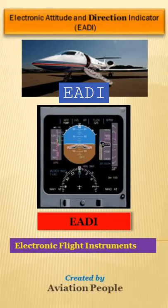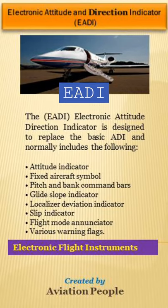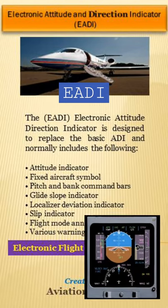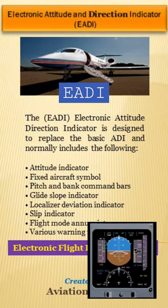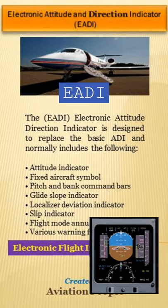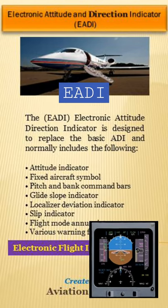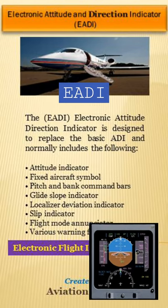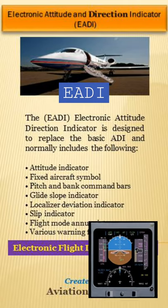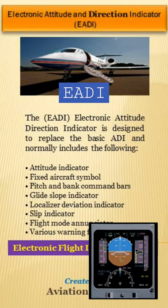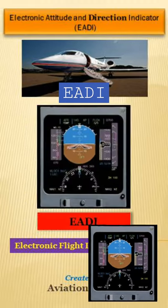The E-ADI is designed to replace the basic ADI and normally includes the following: attitude indicator, fixed aircraft symbol, pitch and bank command bars, glide slope indicator, localizer deviation indicator, slip indicator, flight mode enunciator, and various warning flags.